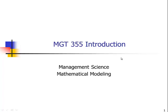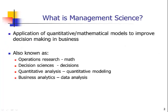In this video, I would like to explain what Management Science is and what we'll cover in this course. Management Science is the application of quantitative and mathematical models to improve decision-making in business. Basically, it's a set of tools that help you make decisions in business, and these tools involve using math and numbers.